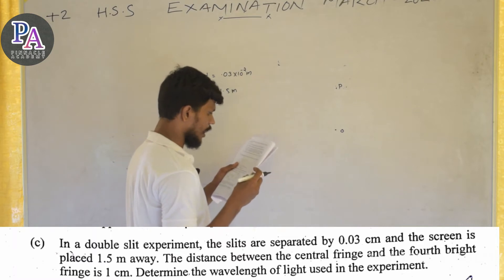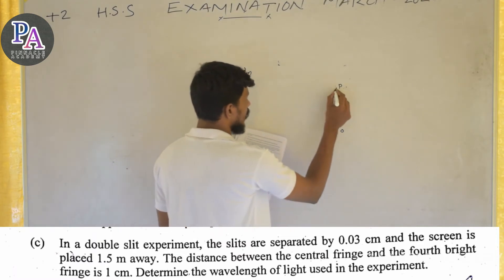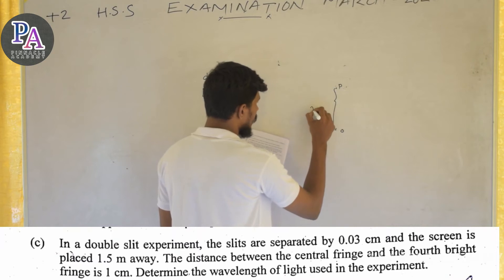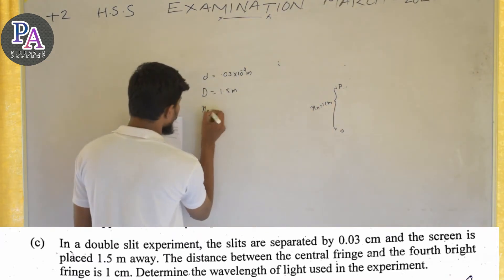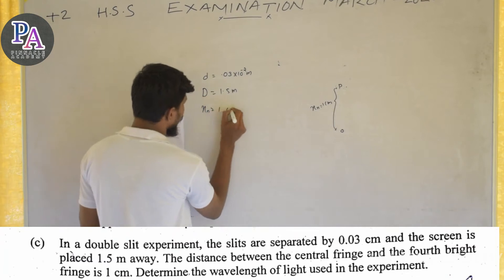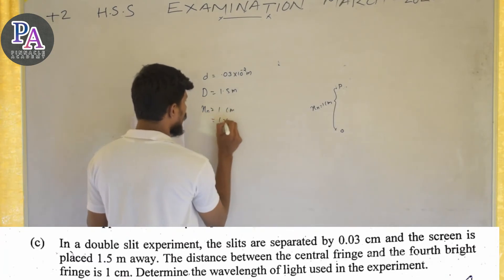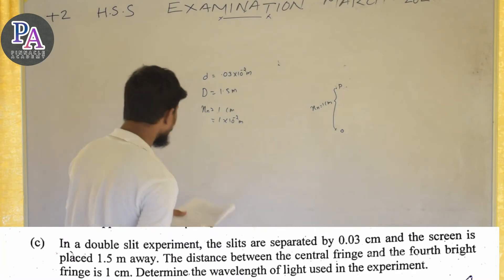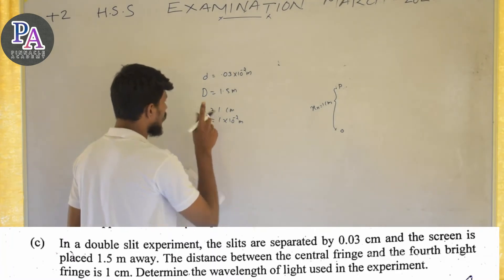The fourth bright fringe distance is 1 centimeter. That means Xn equals 1 centimeter, which is 1 into 10 raised to minus 2 meters.